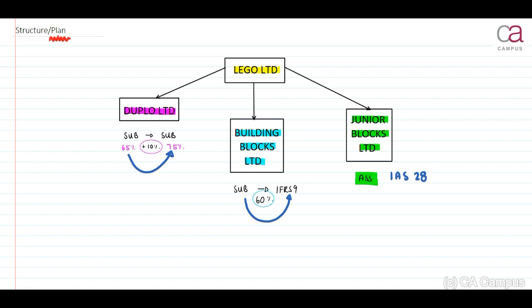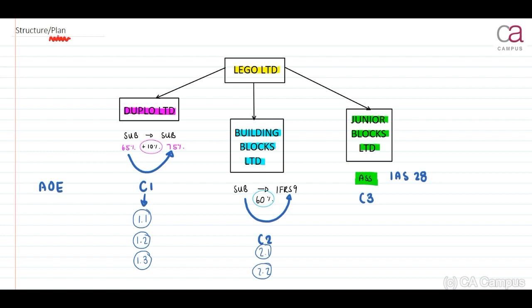For Duplo Limited, I'm going to include my analysis of owner's equity on one page and reference it as Calculation 1, or C1. For Building Blocks, analysis of owner's equity is Calculation 2, or C2. For Junior Blocks, analysis of owner's equity is Calculation 3, or C3. Within C1 — the analysis of owner's equity for Duplo Limited — if I use any amount, I reference it as 1.1, 1.2, 1.3, and so forth. You don't have to include the 'C'; you can use 1.1 circled, 1.2 circled, and so on. For C2, use 2.1 circled, 2.2 circled, and so forth. For C3, use 3.1 circled, 3.2 circled, and so forth.